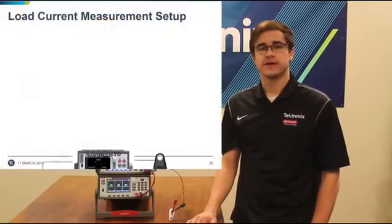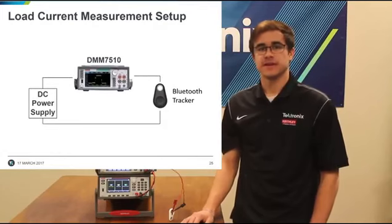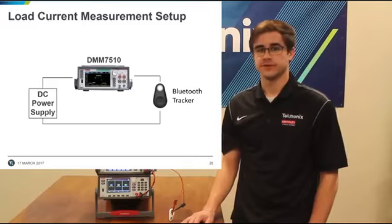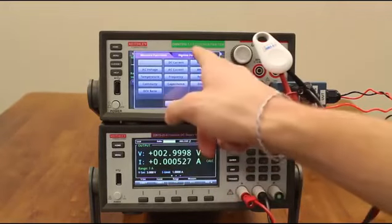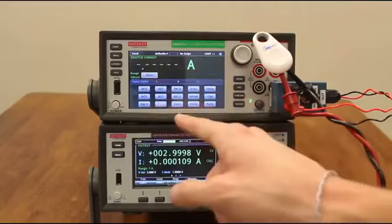I will now show you how this can be done using the DMM 7510, the Keithley 2281S Precision Power Supply, and a Bluetooth Low Energy Tracker. With the device attached to this test fixture and the power supply set to source 3 volts, we will now change the function to digitizing current.